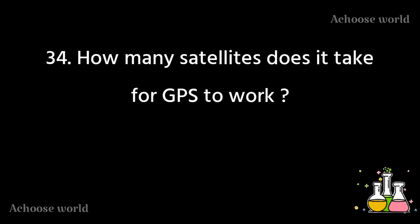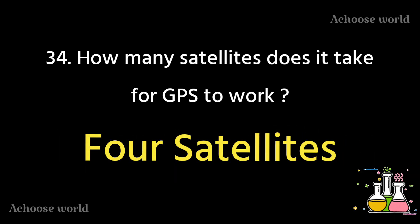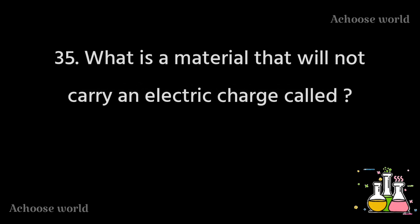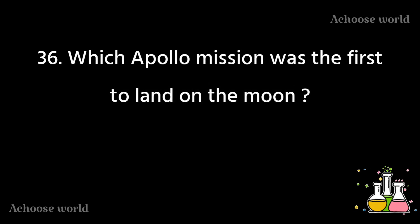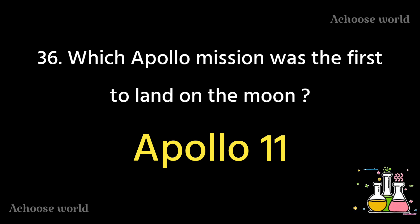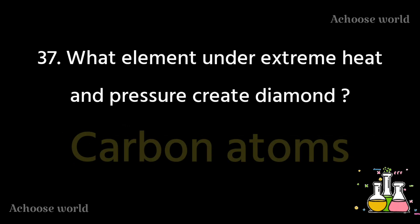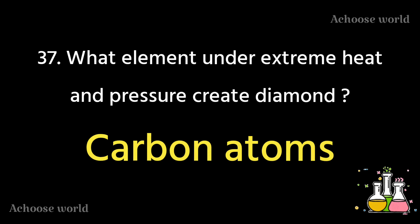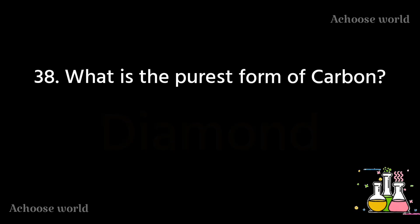How many satellites does it take for GPS to work? 4 satellites. What is a material that will not carry an electric charge called? An insulator. Which Apollo mission was the first to land on the moon? Apollo 11. What element under extreme heat and pressure creates diamond? Carbon atoms. What is the purest form of carbon? Diamond.